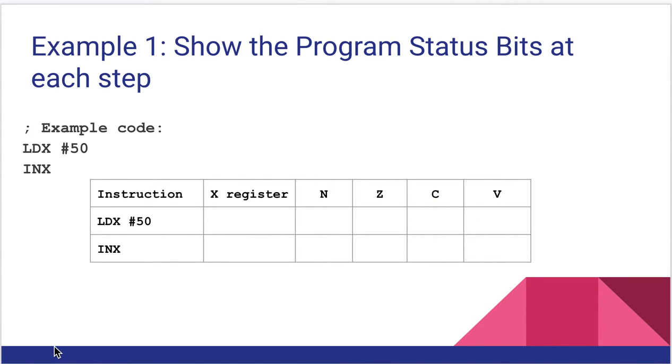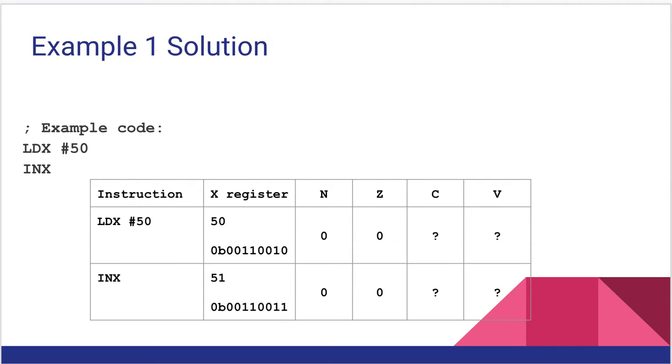All right. So I'm going to do a couple of examples just to show you how we can manipulate the status bits based on the code we write. So I have a two instruction sample of code. I'm loading the value 50 into the X register, then I'm incrementing X. And we're going to see how things change at each step. All right. After we load a 50 into the X register, the value in X will be 50. And I've shown it in binary here, because that'll help us look at some of the other values.